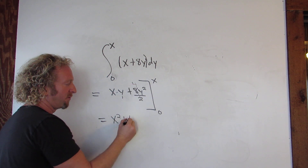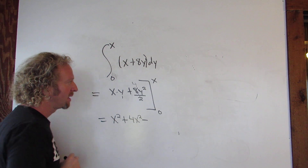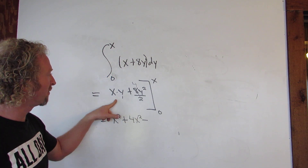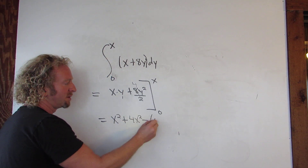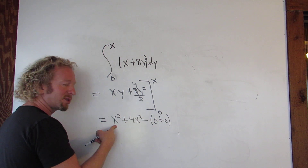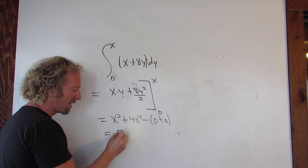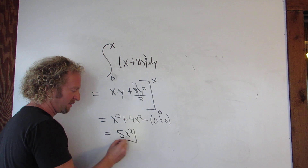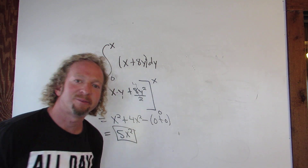So we get 4x squared minus, and then we're plugging in 0 for the y's, so we get 0 plus 0. So we end up with x squared plus 4x squared, so 5x squared. And that is the final answer. I really hope that made sense.